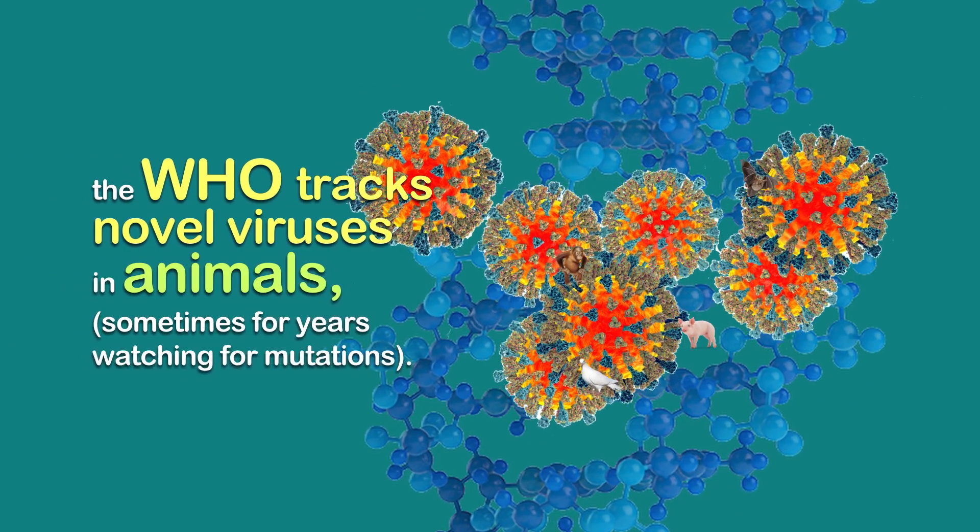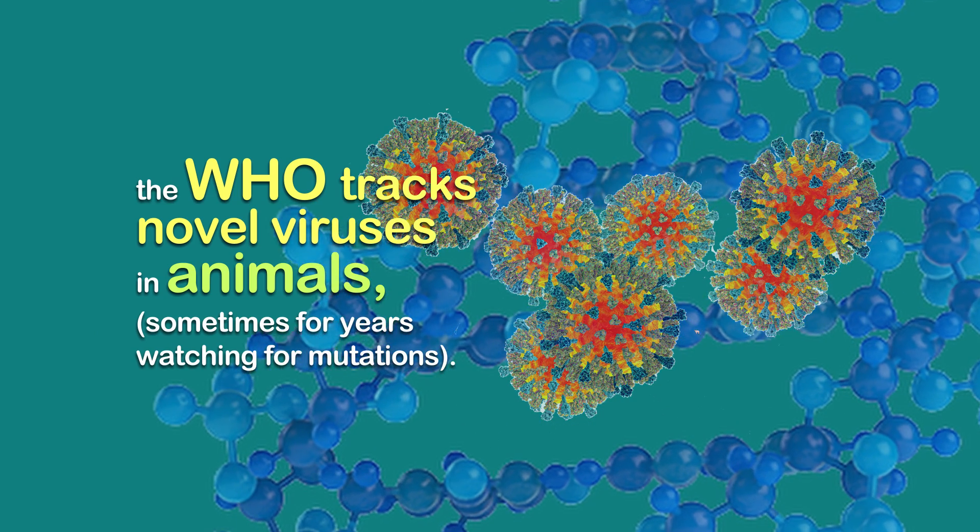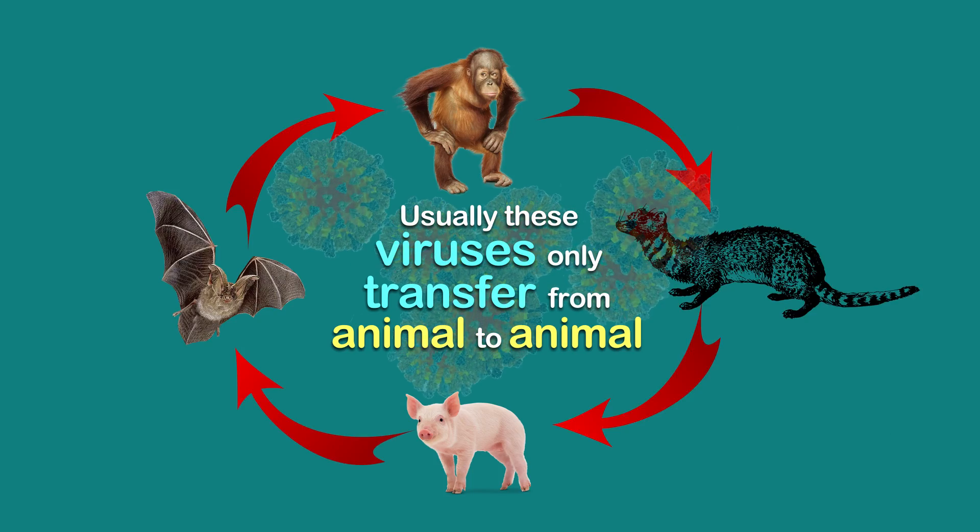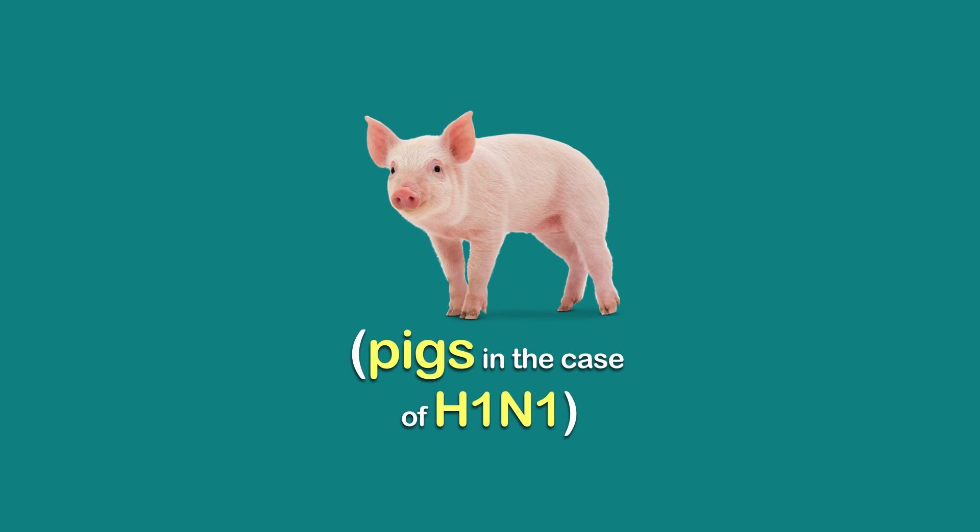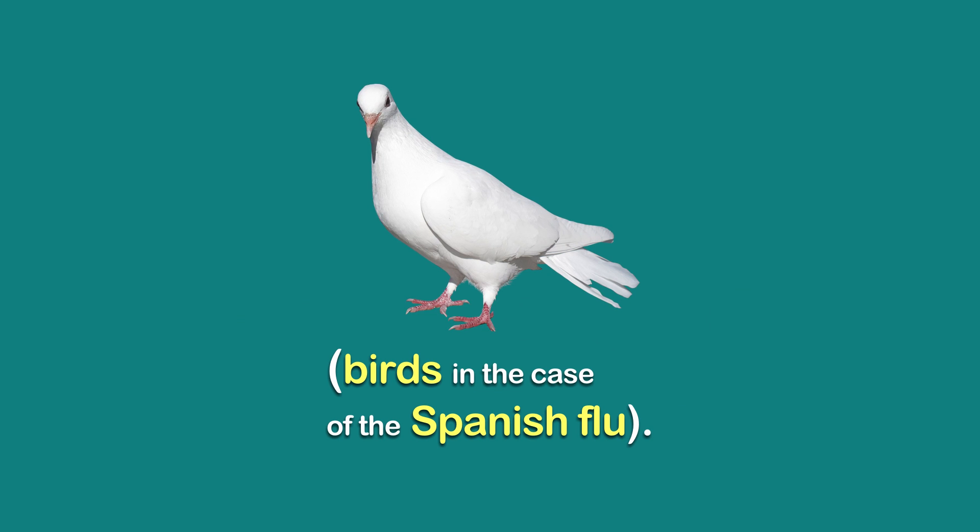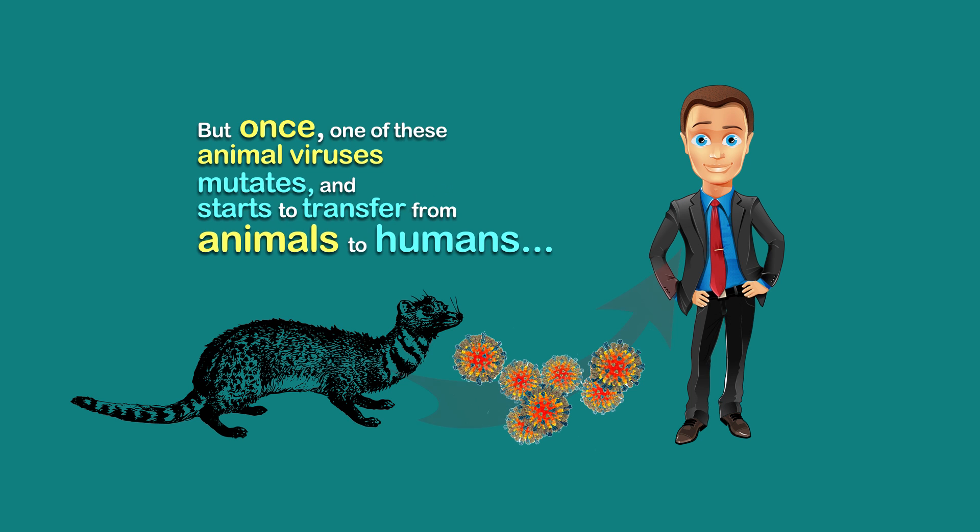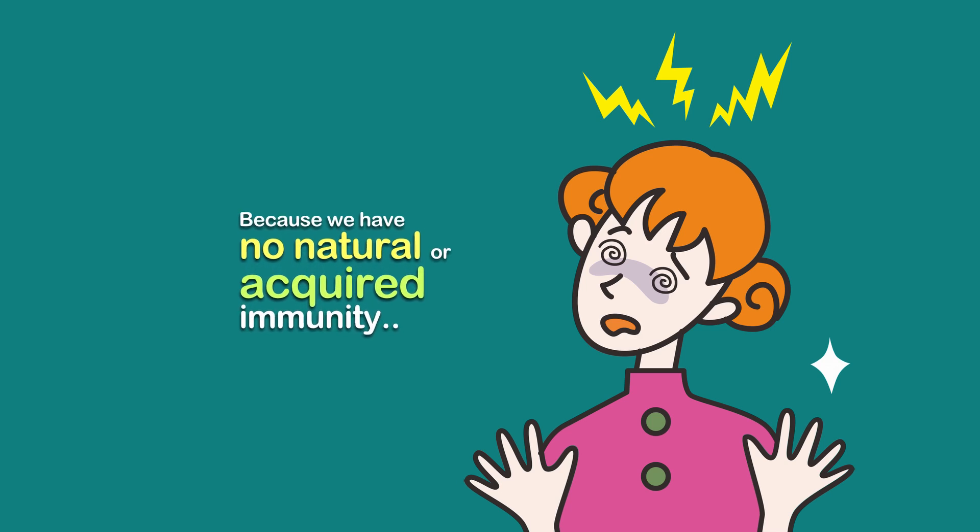The WHO tracks novel viruses in animals, sometimes for years, watching for mutations. Usually these viruses only transfer from animal to animal—pigs in the case of H1N1, birds in the case of the Spanish flu. But once one of these animal viruses mutates and starts to transfer from animals to humans, then it's a problem. Why? Because we have no natural or acquired immunity.